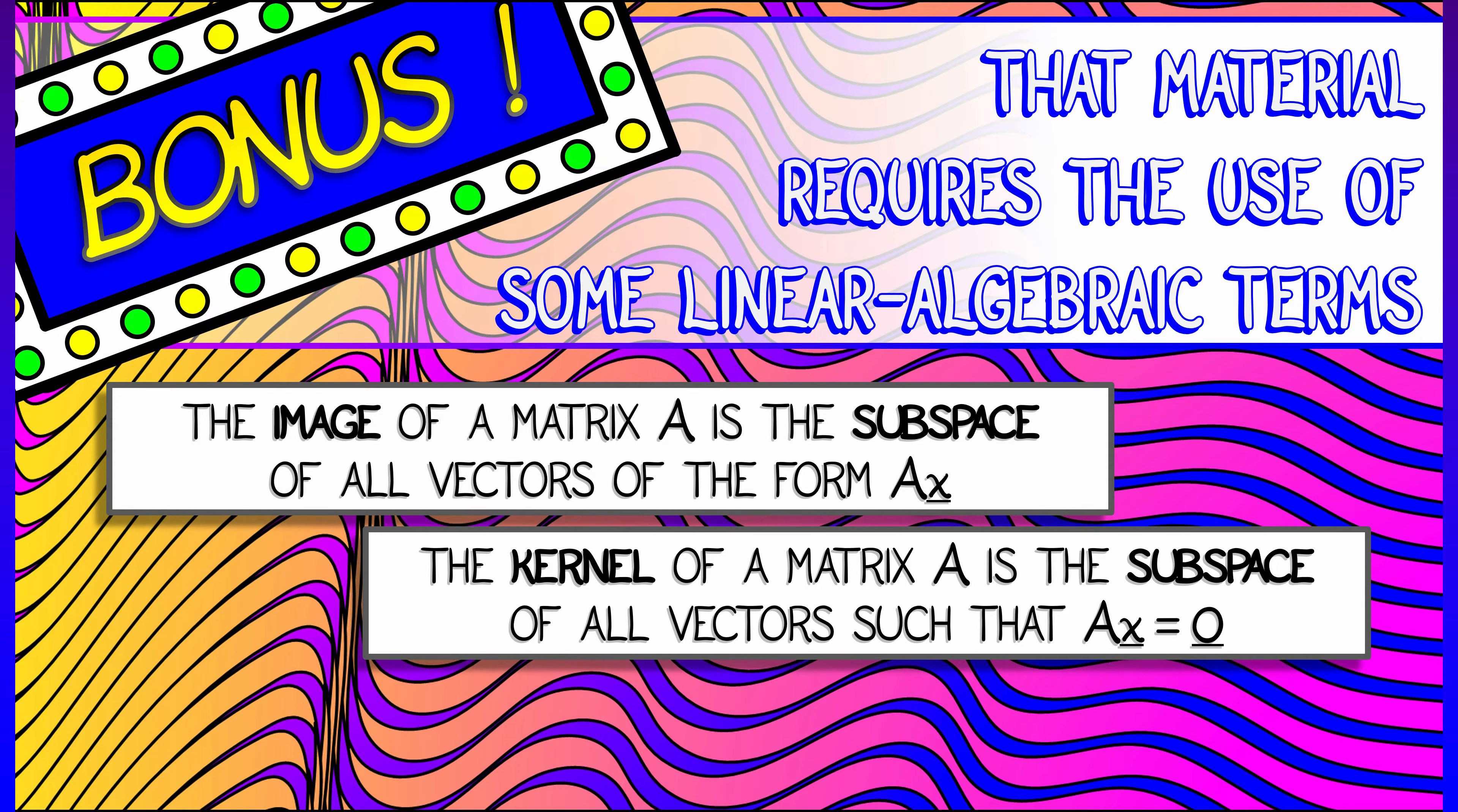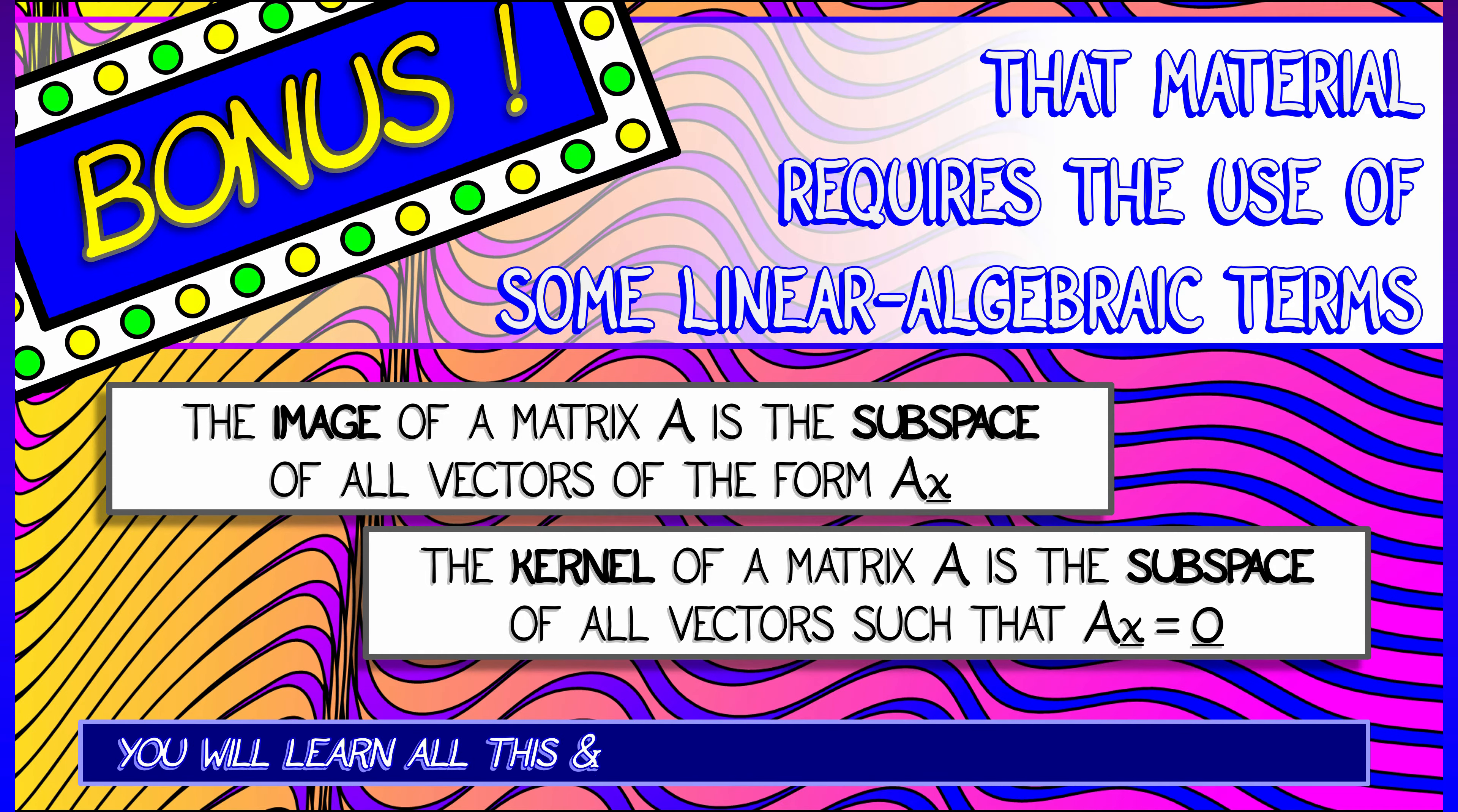The kernel of a matrix is the subspace of all vectors X such that A times X equals zero. It's the set of all inputs that goes to zero. So the image is a subspace in the range of A, and the kernel is a subspace in the domain of A.